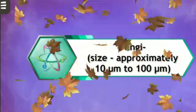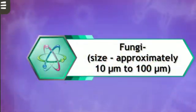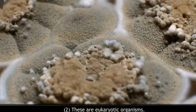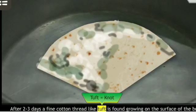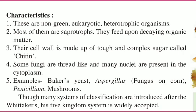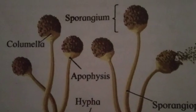Let us move towards kingdom 3, Fungi. Activity: Take a moist piece of bread or bhakri and keep it in a container with a lid for 2-3 days. After 2-3 days, a fine cotton thread-like tuft is found growing on the surface of the bread. Prepare a temporary mount of a few threads from this culture and observe it under the microscope. Characteristics: these are non-green eukaryotic heterotrophic organisms; most of them are saprobes; the cell wall is made up of a tough and complex sugar called chitin; some fungi are thread-like with many nuclei in the cytoplasm. Example: Baker's yeast.